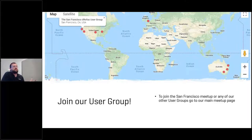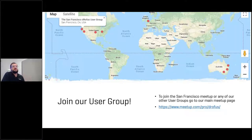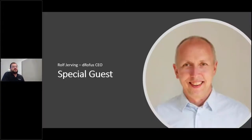We tend to broadcast these sessions, so if you're working remote or can't attend you can join us online. The link to share is meetup.com/pro/Darofus — that will show you all of the user groups. If you have friends in Dallas or Atlanta or other cities, you can point them to those other user groups from there.